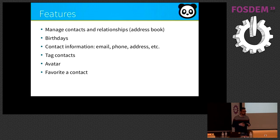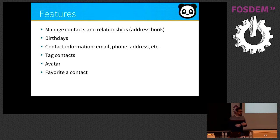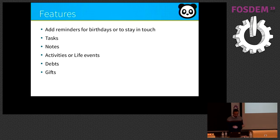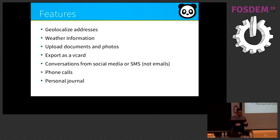You can think of Monica like an address book on your phone, but with more features. You can manage contacts, add relationships between contacts, add birthdays, contact information, avatars, and more. You can add reminders like birthdays or stay-in-touch reminders. You can add tasks, notes, activities, life events, dates, and gifts you gave to your contacts. You can geolocalize addresses, get weather information, upload documents, export a vCard of one contact, log conversations and phone calls.